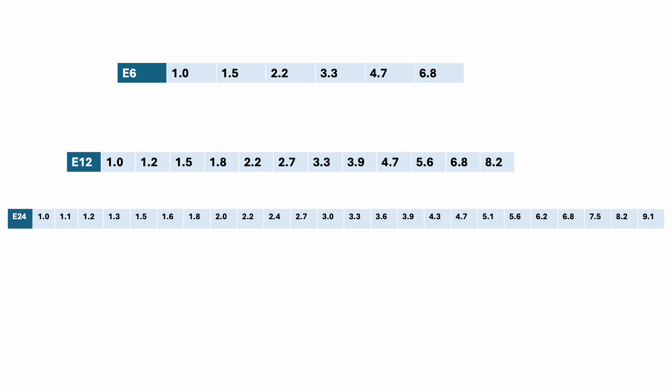Resistors are available in several series which have fixed values. Here we have series like E6, E12, and E24 based on the tolerance. There are also many more series available after E24, like E48 and E96 series.